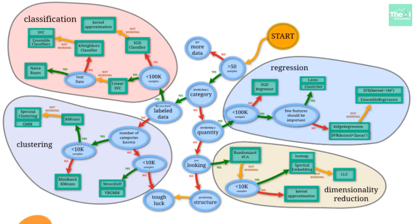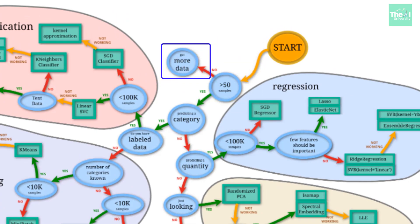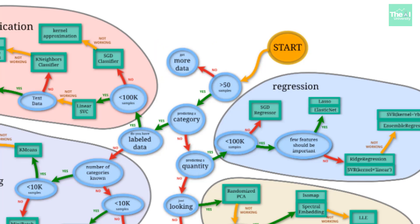Moving on, let's go to the left-hand side of the start button. If the number of samples or observations are less than 50, there is a need to extract more data from either a relational database, flat files, or a NoSQL database. On the other hand, if the number of samples are greater than 50, we will check if we are predicting a category.